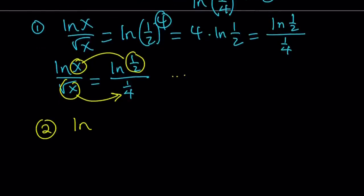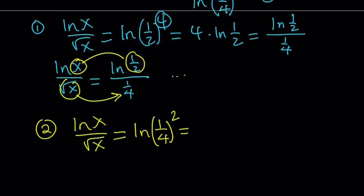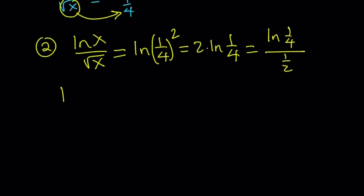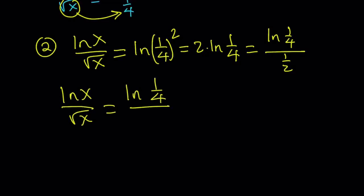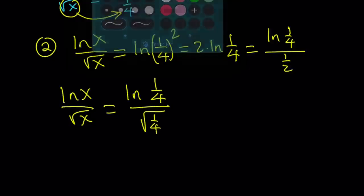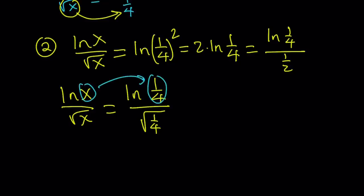So let's work with option two. ln x over square root of x equals ln(1/4) squared, which can be written as 2 times ln(1/4), which can be written as ln(1/4) over 1/2. So: ln x over square root of x equals ln(1/4) over 1/2, which you can write as square root of 1/4. This clearly shows that x must be 1/4. So x equals 1/4 is at least one solution.